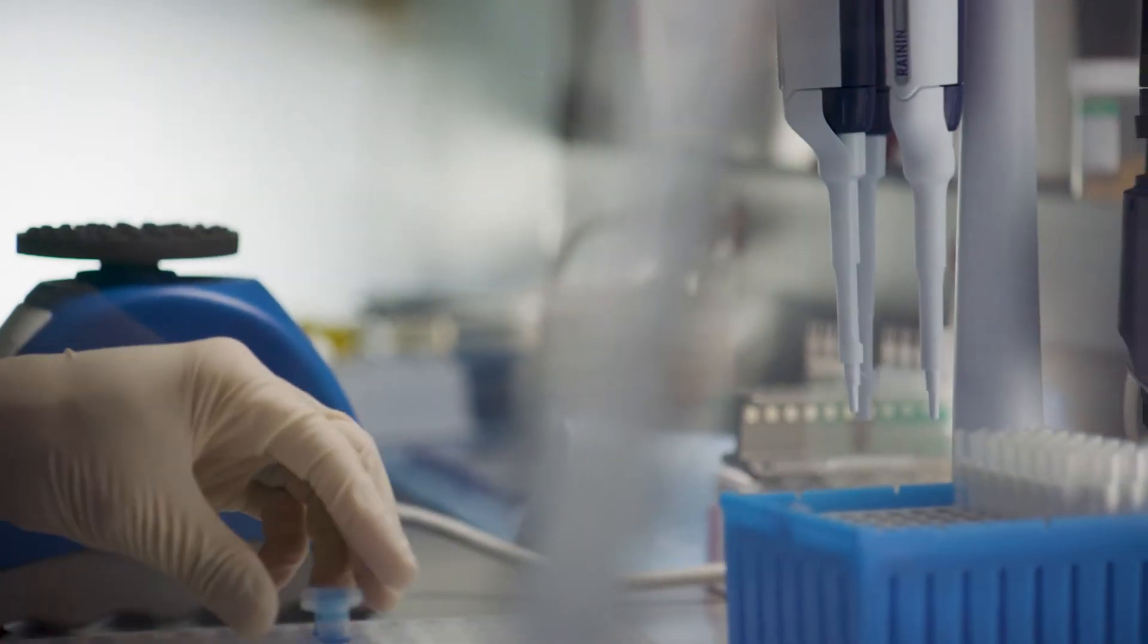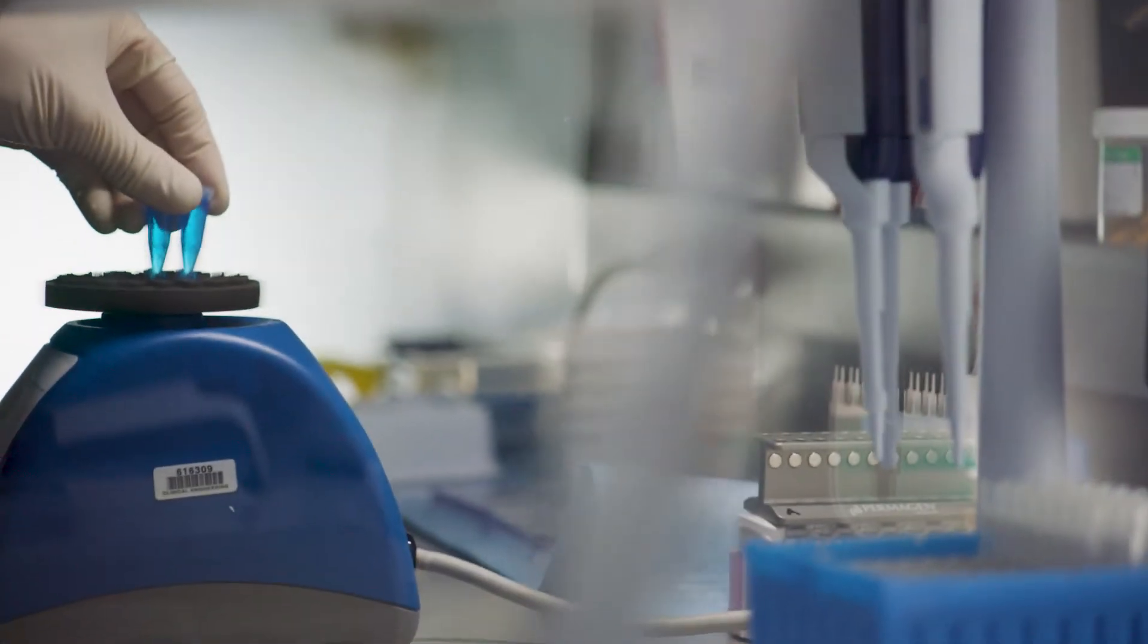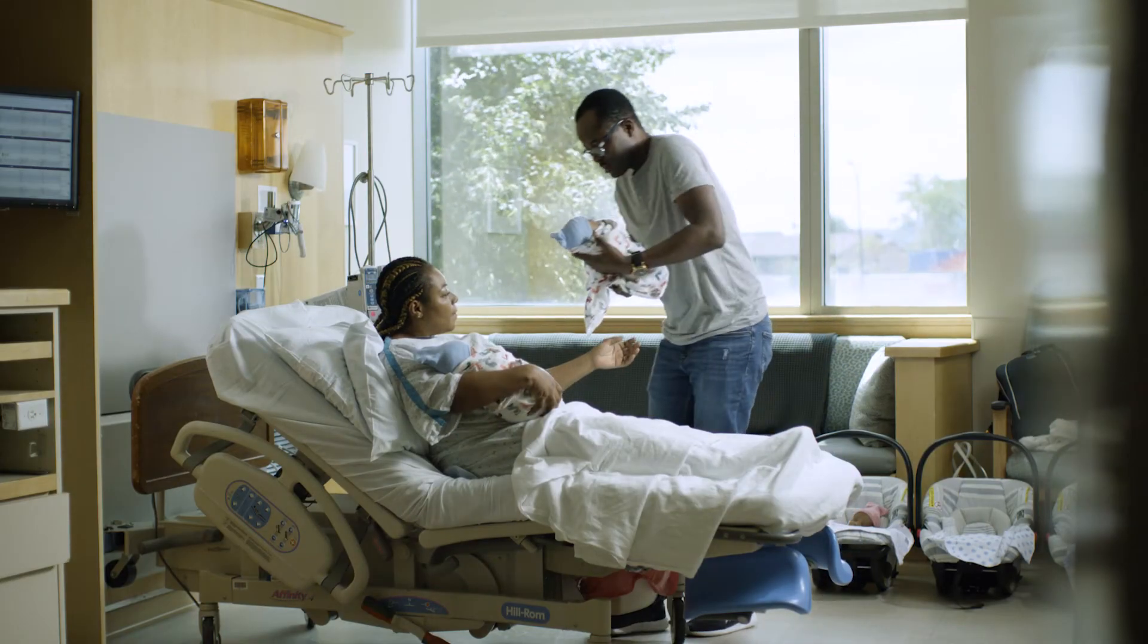Ovarian tissue transplantation involves taking the surface of the ovary and transplanting that ovarian surface back into the place where the ovary used to be. The neat thing about this approach is that tissue can ovulate eggs into the uterus the normal way.